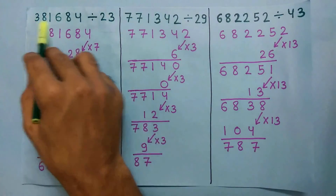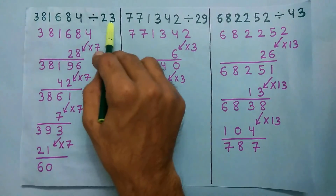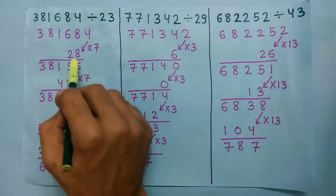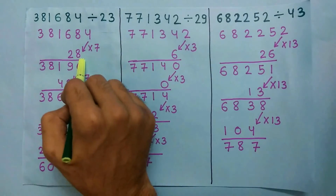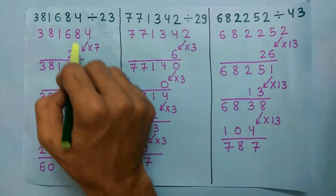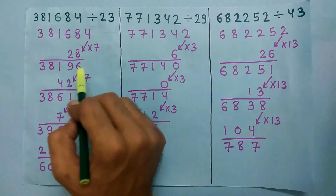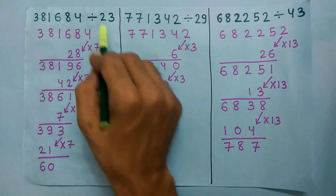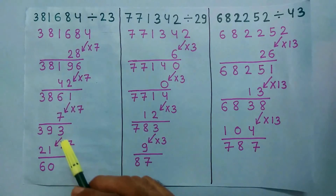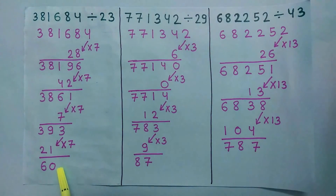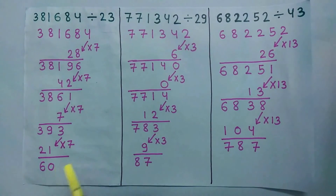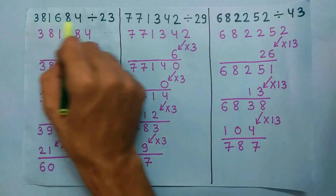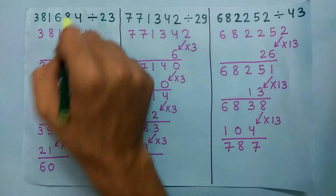To check if this number is divisible by 23 or not, multiply the last digit by 7 and we get 28. Now add this 28 to the remaining number and we get this number. We repeat this process until we get a small number. In this case the small number is 60, and 60 is not divisible by 23, so this number is also not divisible by 23.